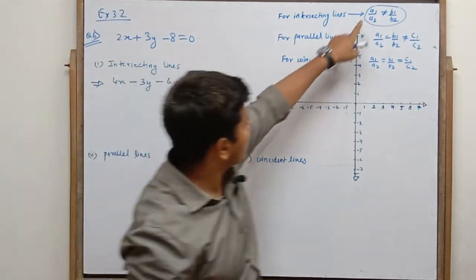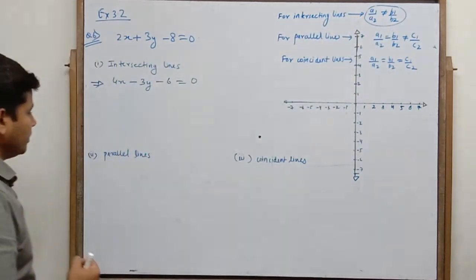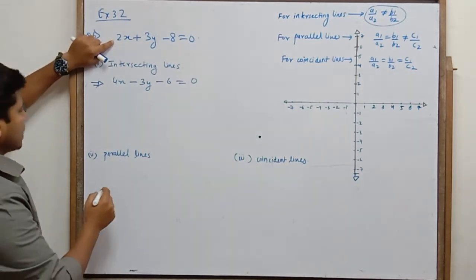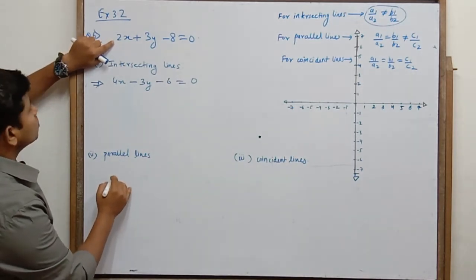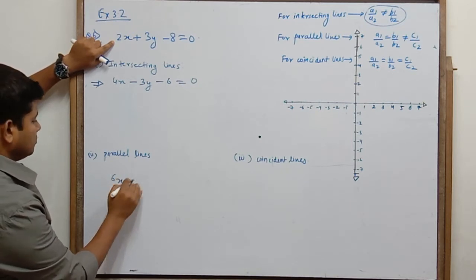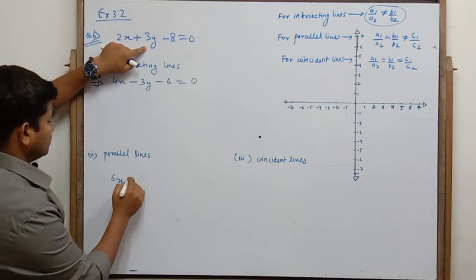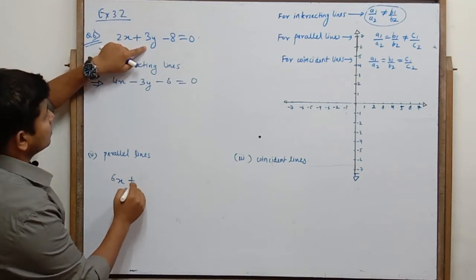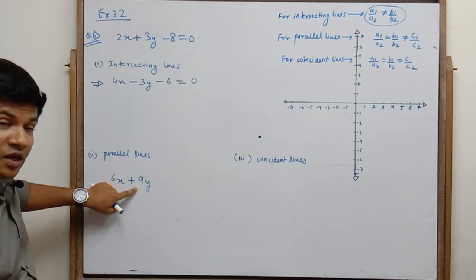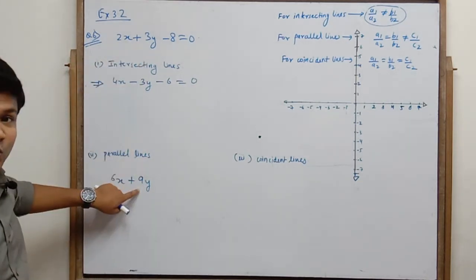Yes, they will make an intersecting line because a1/a2 is not equal to b1/b2. अब parallel के लिए सोचते हैं। Parallel के लिए पहले ratios equal होने चाहिए। तो triple कर देते हैं: यह 6x. तो 2/6 = 1/3. इसका भी triple करते हैं: plus 9y. तो 3/9 = 1/3. So a1/a2 is equal to b1/b2, both are 1/3.